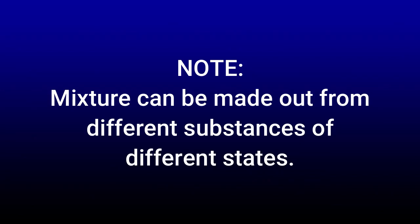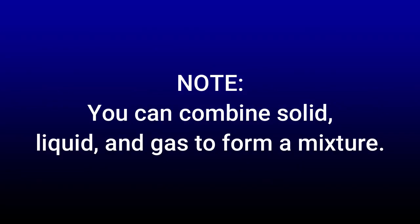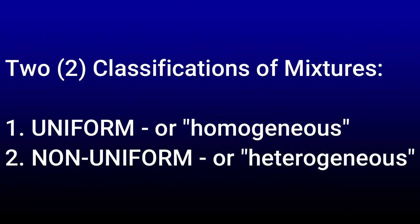Mixture can be made out from different substances of different states. You can combine solid, liquid, and gas to create a mixture. Now let's talk about the different types of mixtures. There are two classifications of mixtures. The first one is called uniform or homogeneous mixtures, while the other one is called non-uniform or heterogeneous mixtures.